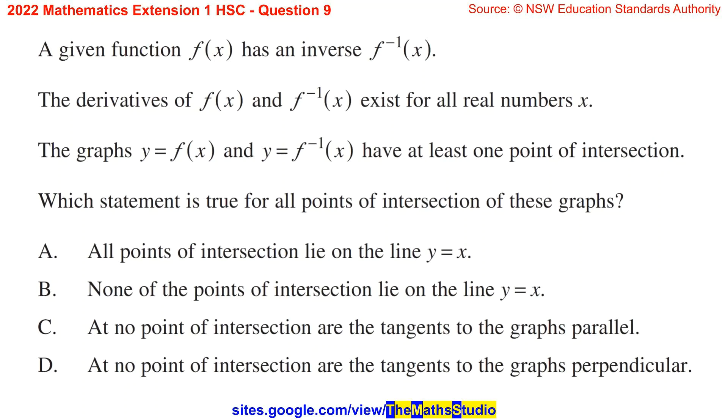Question 9. A given function f(x) has an inverse f^(-1)(x). The derivatives of f(x) and f^(-1)(x) exist for all real numbers x. The graphs y = f(x) and y = f^(-1)(x) have at least one point of intersection. Which statement is true for all points of intersection of these graphs?